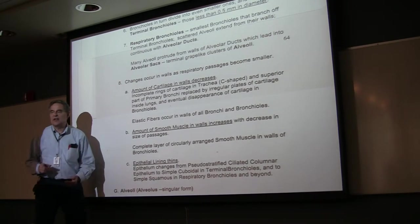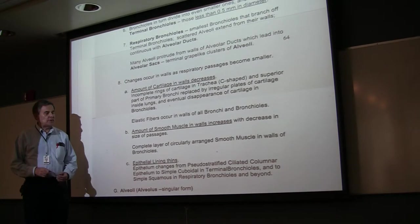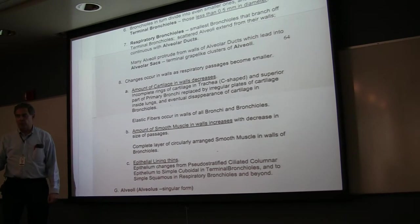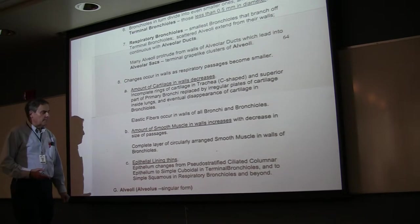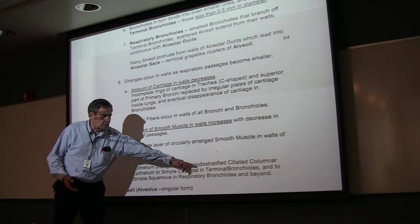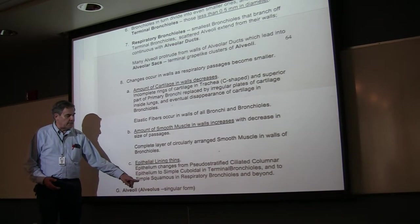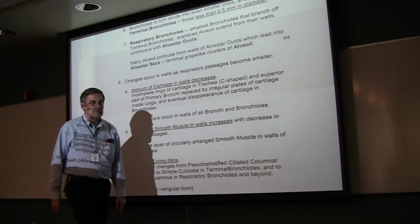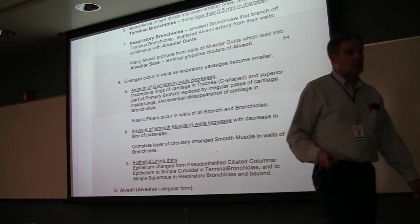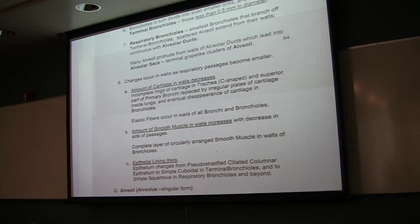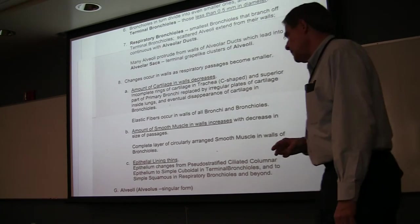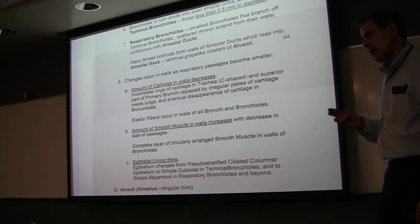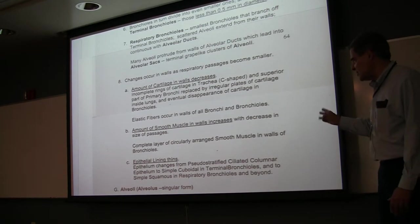A third thing that we see is a thinning of the epithelial lining of the respiratory passageways. The epithelium changes from pseudostratified ciliated columnar epithelium in the lower part of the larynx, the trachea, and the bronchi, that eventually goes into simple cuboidal by the time you get to the terminal bronchioles, and eventually to simple squamous when you get to the alveoli, which of course facilitates gas exchange.